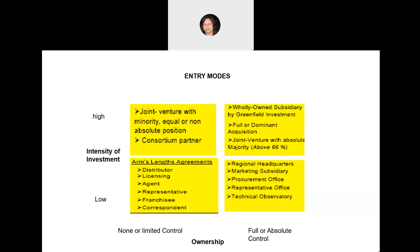When the company is looking at limited control of operations but is willing to spend more capital, it can go for some form of joint venture. Since it is not looking at overall control, it will either have an equal equity partnership with a local player, hold a minority stake, or join a consortium where multiple companies hold equity but the company under consideration is not the dominant partner. Here, the intensity of investment is high but control is minimal.